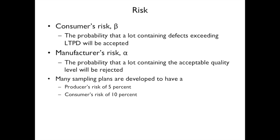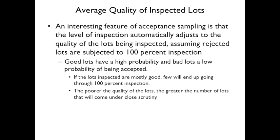Many sampling plans are developed with a producer's risk of 5% and a customer's risk of 10%. An interesting feature of acceptance sampling is that the level of inspection automatically adjusts to the quality being inspected, assuming rejected lots undergo 100% inspection. Good lots have a high probability of acceptance; bad lots have a low probability. The poorer the quality, the greater the number of lots that will come under close scrutiny.